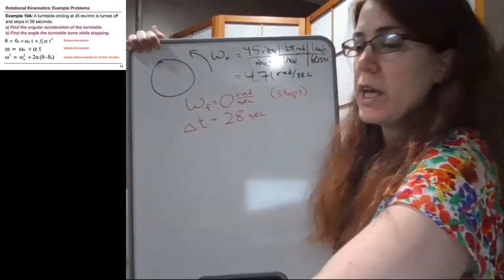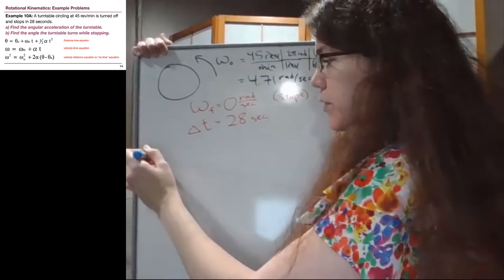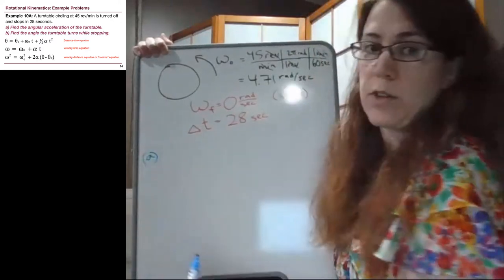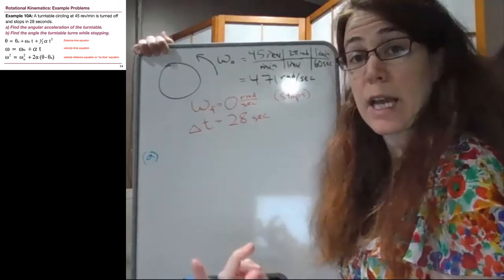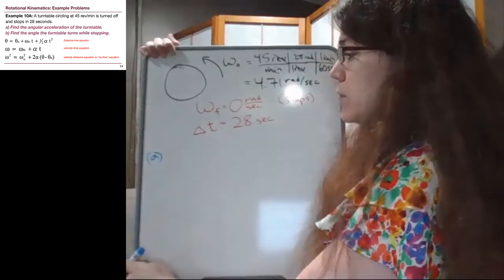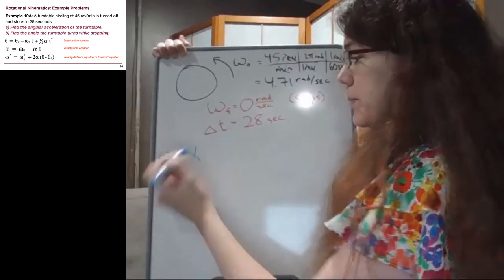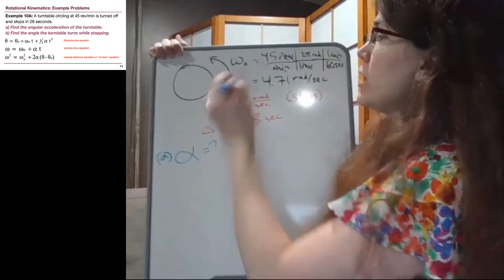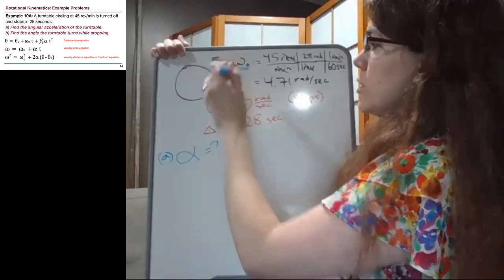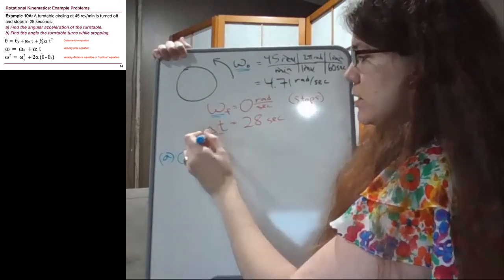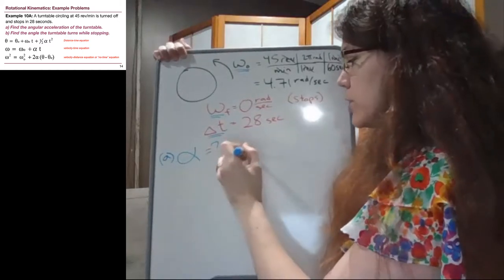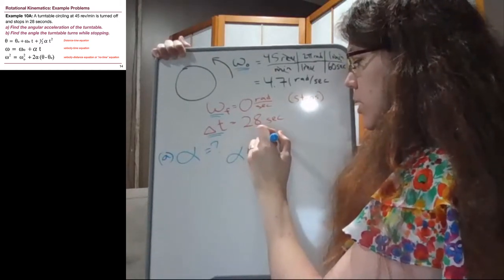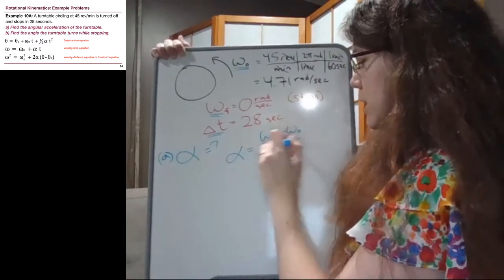So in part a, we are trying to find the angular acceleration. When we see that phrase angular acceleration, that means we need to think of alpha. And so that's our unknown here. If we look at the things we have, initial omega, final omega, and the change in time, we can just use the definition of angular velocity.